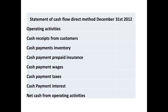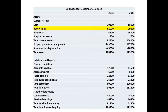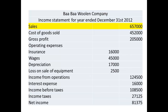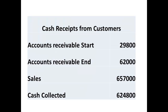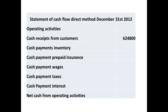We begin with the cash flows from the operating activities of Barbar Woolens. Listed are the cash flows that we require, starting with the cash receipts from customers. If we take the figure from accounts receivable at the start, add the sales made, then subtract the balance in accounts receivable at the end, we have a figure for cash collected during the year from customers. The receivables figures come from the balance sheets, and the sales figure from the income statement. We now calculate the cash collected, giving us a figure of $624,800 for cash receipts.